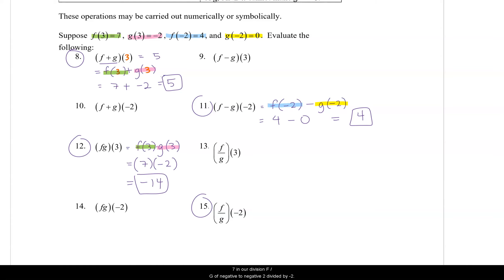And then in our division, f divided by g of negative 2, f of negative 2 is 4, g of negative 2 is 0, we can plug in those numbers. 4 over 0, uh oh, I'm dividing by 0, I can't, this is undefined.